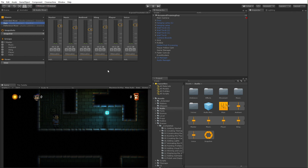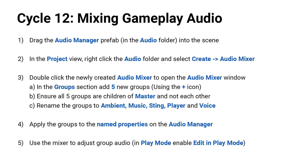Now that I've completed adding the audio, which is a very simple step, it's time for you to do the same. First, drag the audio manager prefab from the audio folder into your scene. In the project view, right click in the audio folder and select create audio mixer. Double click the newly created mixer to open the audio mixer window. In the groups section, add five new groups using the plus icon - make sure you've selected master each time. Rename those groups ambient, music, sting, player, and voice to match the naming pattern on the audio manager script. Apply the groups to the named properties on the audio manager, save your scene, hit play, and edit in play mode to adjust your audio. Then it will be time to move on to cycle 13.